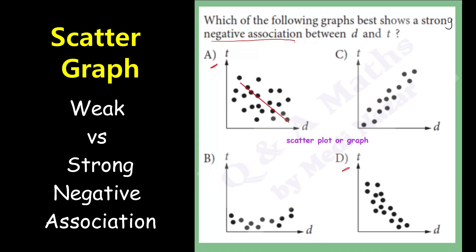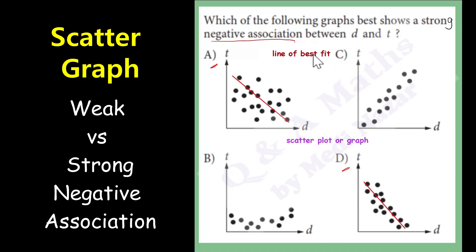We can draw a line following the behavior of the data points, such as this line and this line. These lines are called the line of best fit.